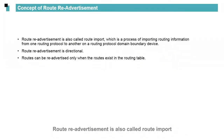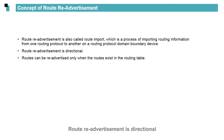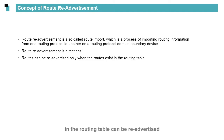To implement route interworking on the entire network, use route readvertisement. Route readvertisement, also called route import, is a process of importing routing information from one routing protocol to another on the routing protocol domain boundary device. Route readvertisement is directional — only routes that already exist in the routing table can be readvertised.